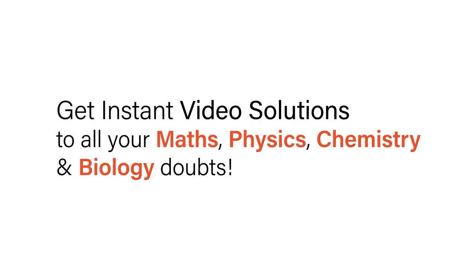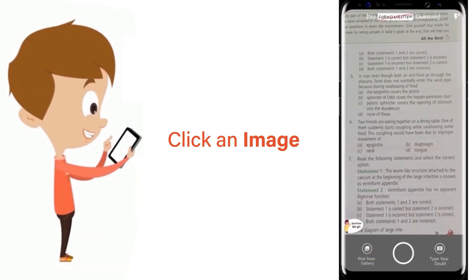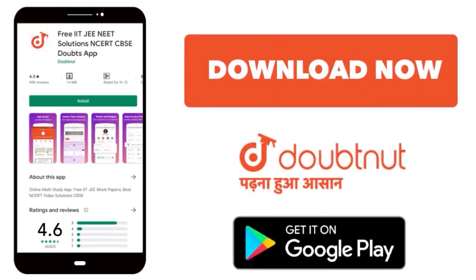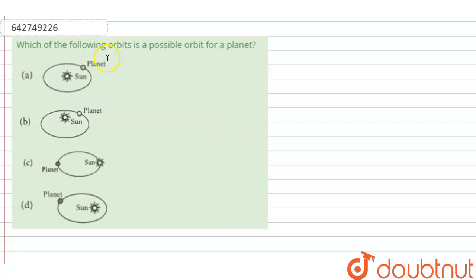With Doubtnut, get instant video solutions to all your maths, physics, chemistry, and biology doubts. Just click the image of the question, crop the question, and get instant video solution. Download Doubtnut app today. Hello students, here the question is which of the following orbits is a possible orbit for a planet?